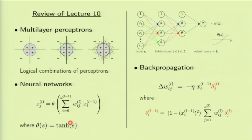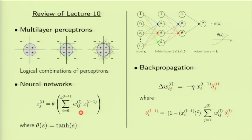If S is very small, this is almost linear—tanh S is linear. The most important aspect is that it's differentiable, a smooth function. Therefore, the dependency of the error in the output on the parameters W_ijl will be a well-behaved function for which we can apply gradient descent.